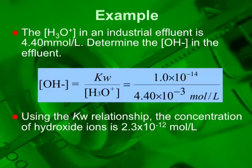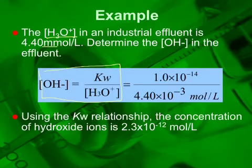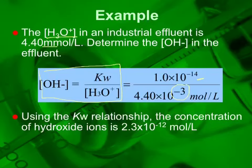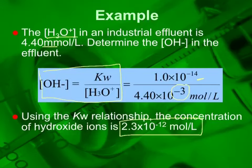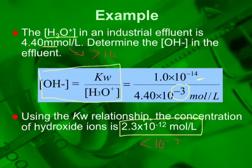For example, the concentration of hydronium in an industrial effluent is 4.4 millimoles per liter — determine the concentration of hydroxide. Using kW = 1.0×10⁻¹⁴ and [H₃O⁺] = 4.4×10⁻³ mol/L, we solve and find [OH⁻] = 2.3×10⁻¹² mol/L. This is an acidic solution because [OH⁻] is less than 10⁻⁷, or equivalently, [H₃O⁺] is greater than 10⁻⁷ mol/L.